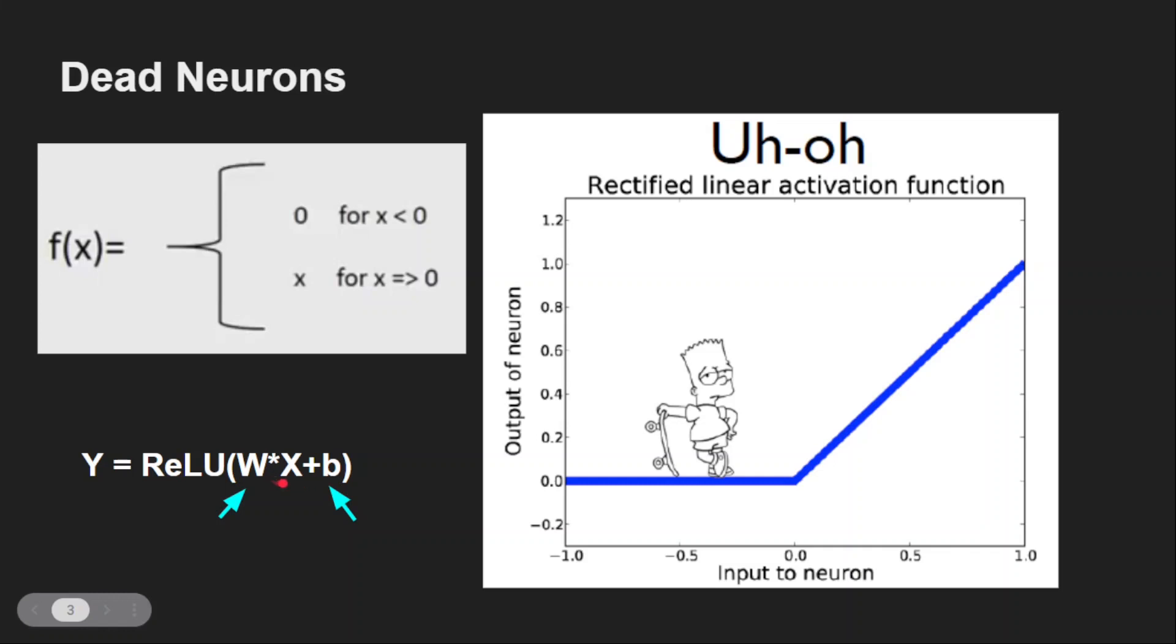Now we don't have control over these parameters, do we? We can't avoid negative inputs going to ReLU. We can't control the weights, we can't control the bias. All these are randomly initialized and the parameters are learned during the training. Now how do we solve this dead neurons issue?